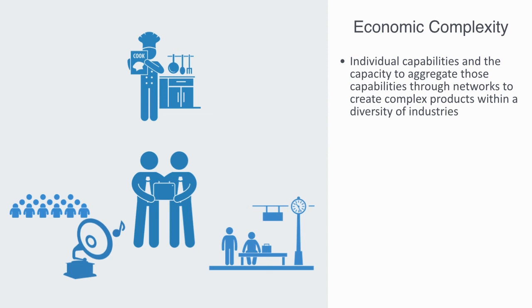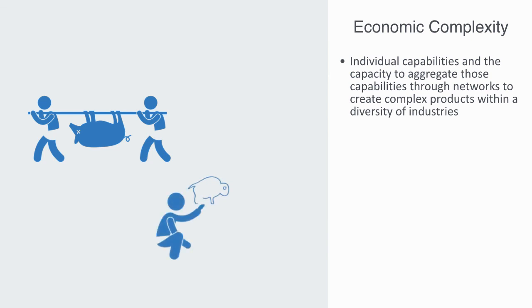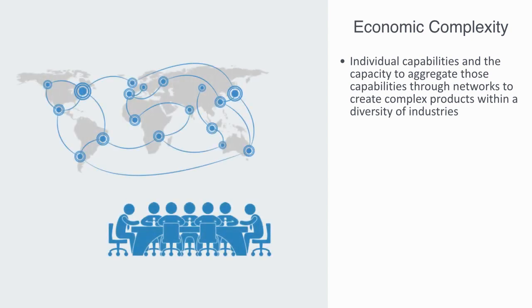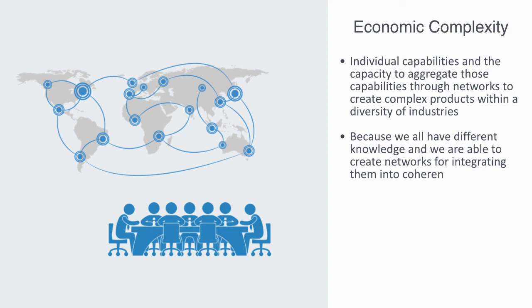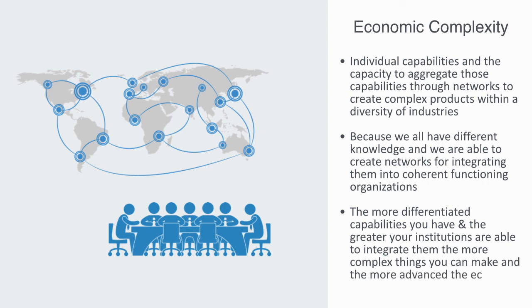Know-how is defined as an individual's capacity to perform a task. Collective know-how is the capacity to perform tasks that cannot be performed by an individual. No individual can play a symphony, produce a laptop, or make the trains run on time. In pre-agrarian societies, an individual knows almost as much as the whole organization knows, but in advanced economies we're able to make more things that are more complex because we all have different knowledge and we're able to create networks for integrating them into coherent functioning organizations. The more individual differentiated capabilities you have and the greater your institutional capacity to integrate them, the more complex things you can make and thus the more advanced your economy is.